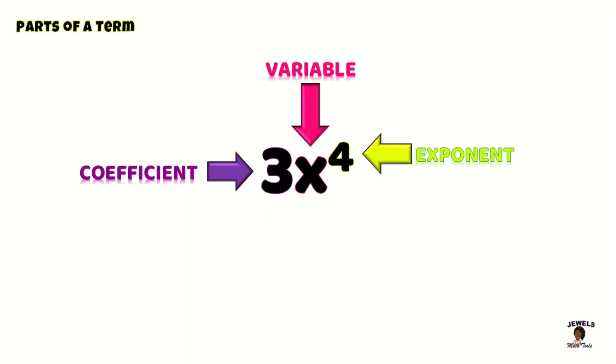So our terms are made up of a variety of parts which consist of our base, our coefficient, variable, and in some cases an exponent. But these are the major parts of our terms.